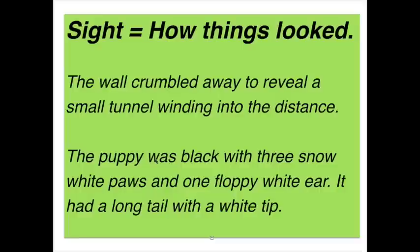Sight — how things looked. An example of using sight would be: the wall crumbled away to reveal a small tunnel winding into the distance. Or: the puppy was black with three snow-white paws and one floppy white ear. It had a long tail with a white tip. From these two simple descriptions, we really begin to experience the type of wall or puppy the reader is looking at.